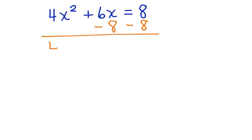And when we do that, we end up with 4x squared plus 6x minus 8 equals 0. Now our equation is in standard form, and it makes sense to use the quadratic equation, the quadratic formula, to solve it.